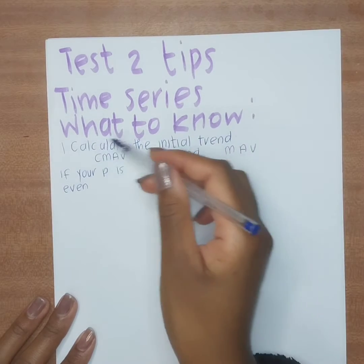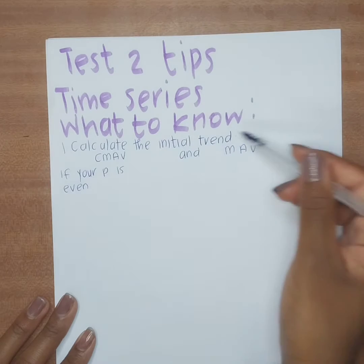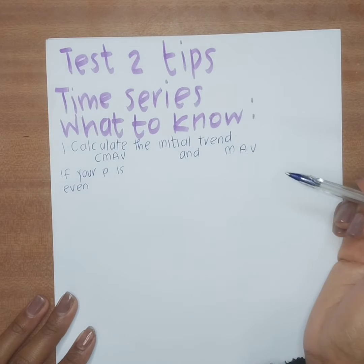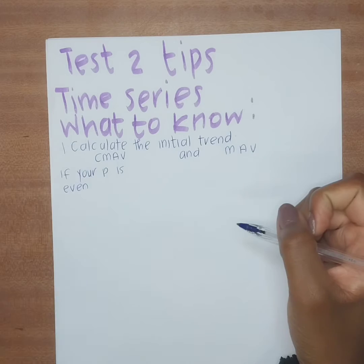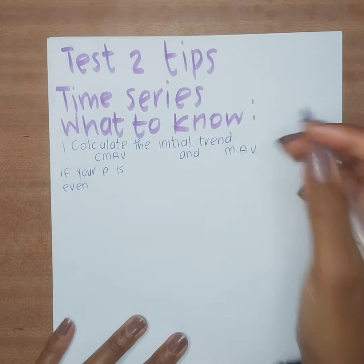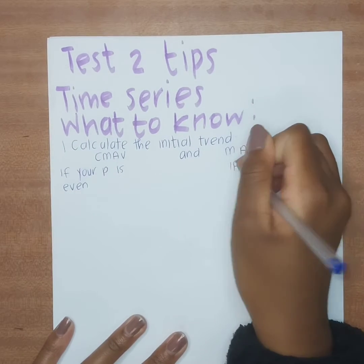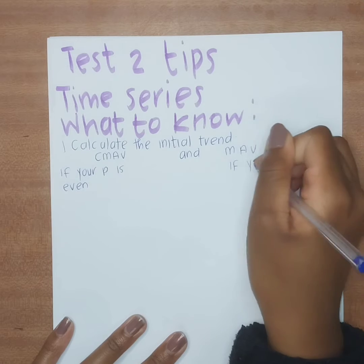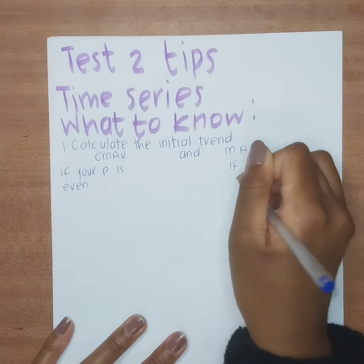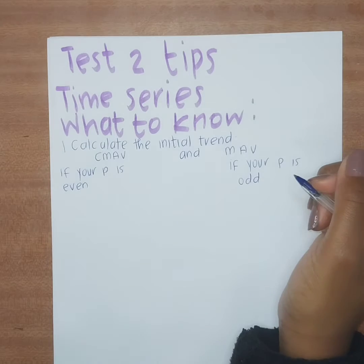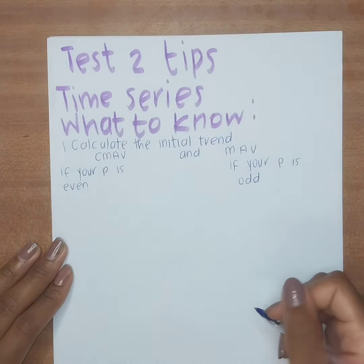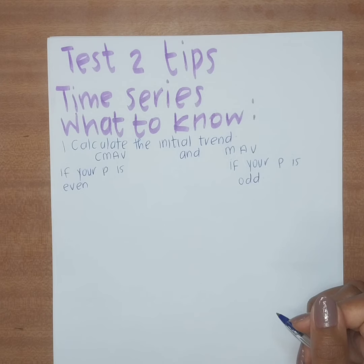To get the CMAV, you first calculate MAV1 and MAV2, then divide by two. Your MAV is calculated when p is odd. Let's look at how to calculate the CMAV in practice.